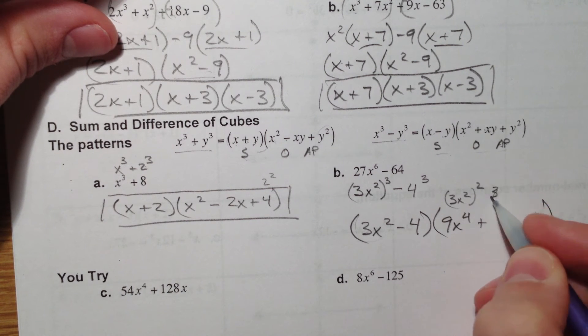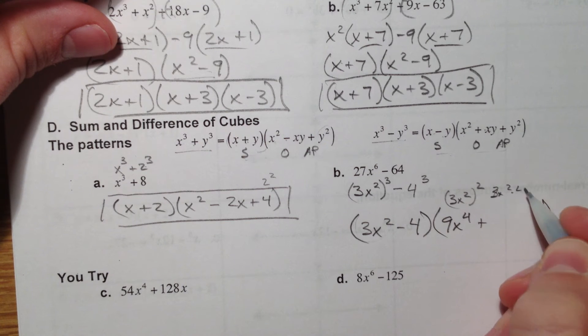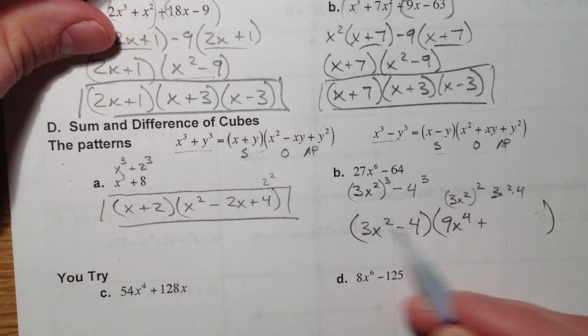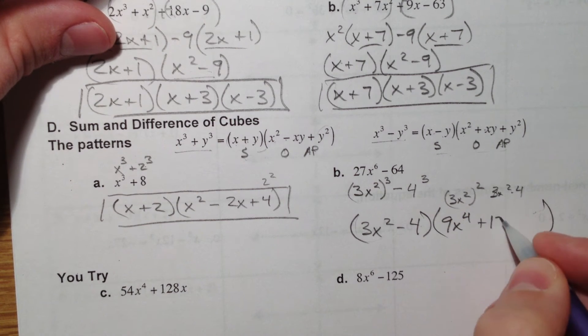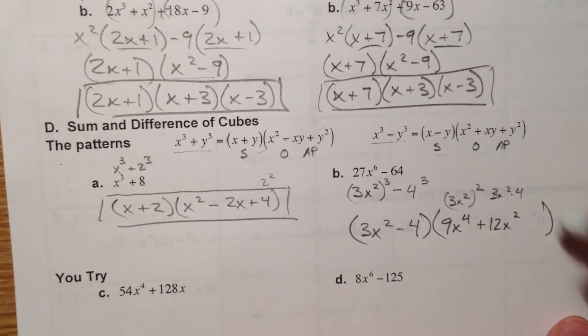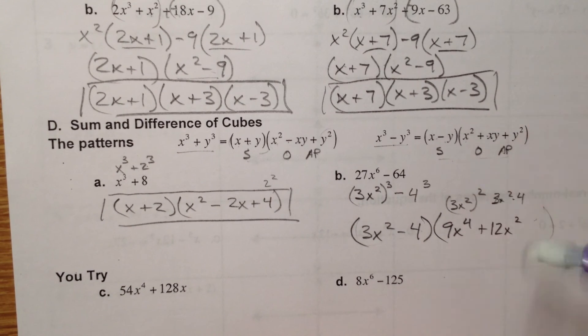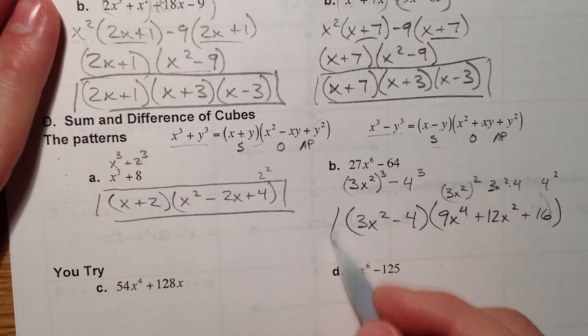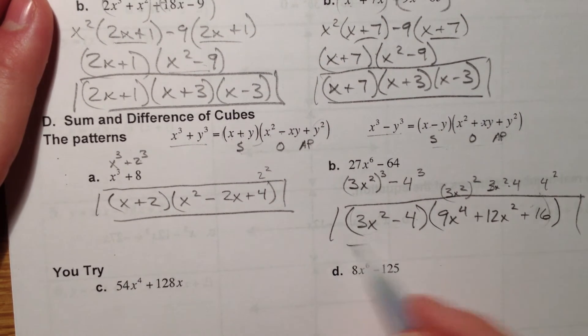And then x² times 4. Notice that this is always going to be positive. Ignore the negative when you go to multiply these two together. So you get 12x². So you get 12x². And then 4² on the back. Plus 16. And that is how you do sum and difference of cubes.